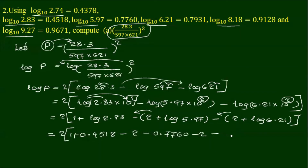1 plus log 2.83 is 0.4518. 0.4518 minus 2 minus log 5.97 is 0.7760. 0.7760 minus 2 minus log 6.21 is 0.7931.